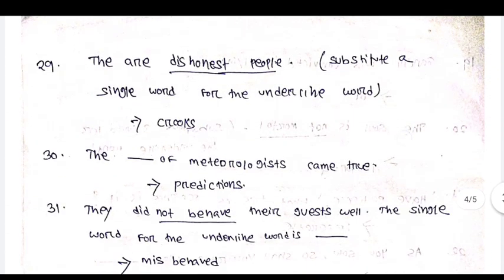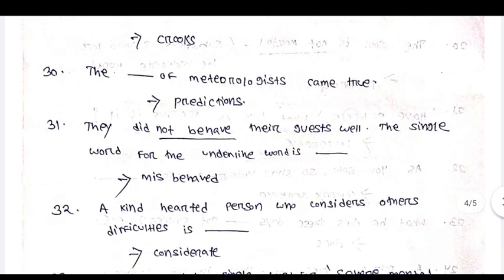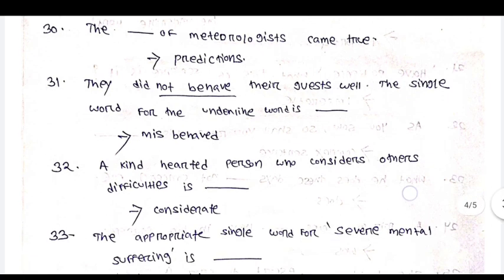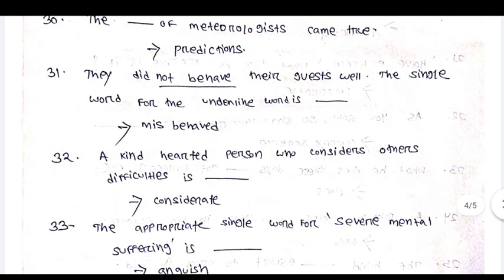There are dishonest people. Substitute a single word for the underlined word — crooks. The dash of meteorologist came true. Prediction.